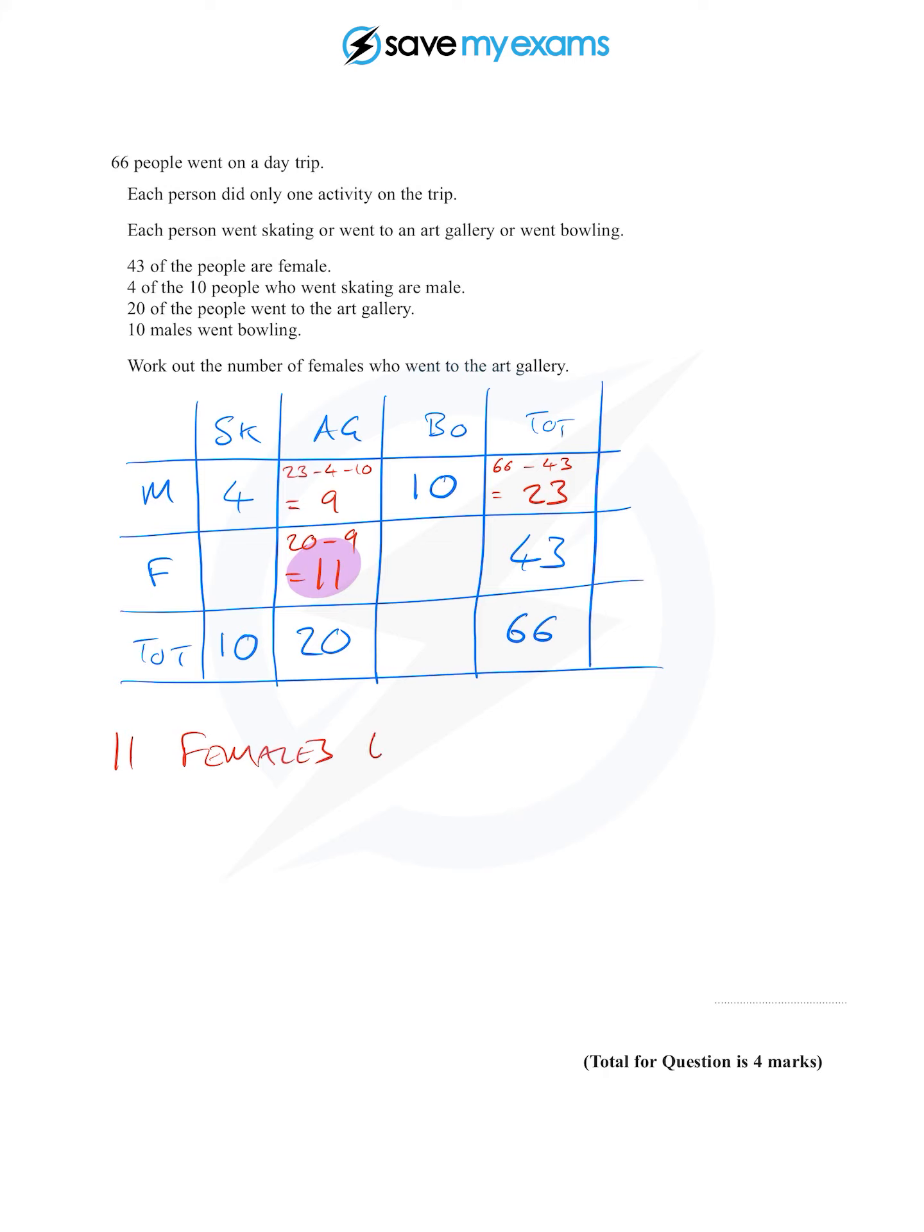And that is that. We could if we wanted to fill in all the other numbers in the two-way table, but since we've found the 11 already we don't really need to, so we'll stop there.